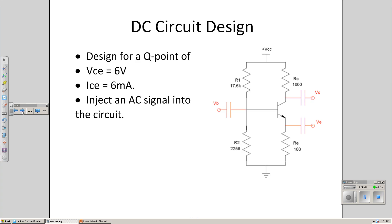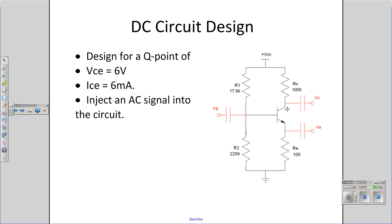Now recall from before, the circuit on the right was designed so that the Q point was at 6 volts at the collector, 6 milliamps. I would like to inject an AC signal on top of that. When I do that, I don't want to change the DC operating point, because I went to a lot of trouble to design that circuit to set the Q point. If I add anything in DC, I'm going to mess up my previous design.